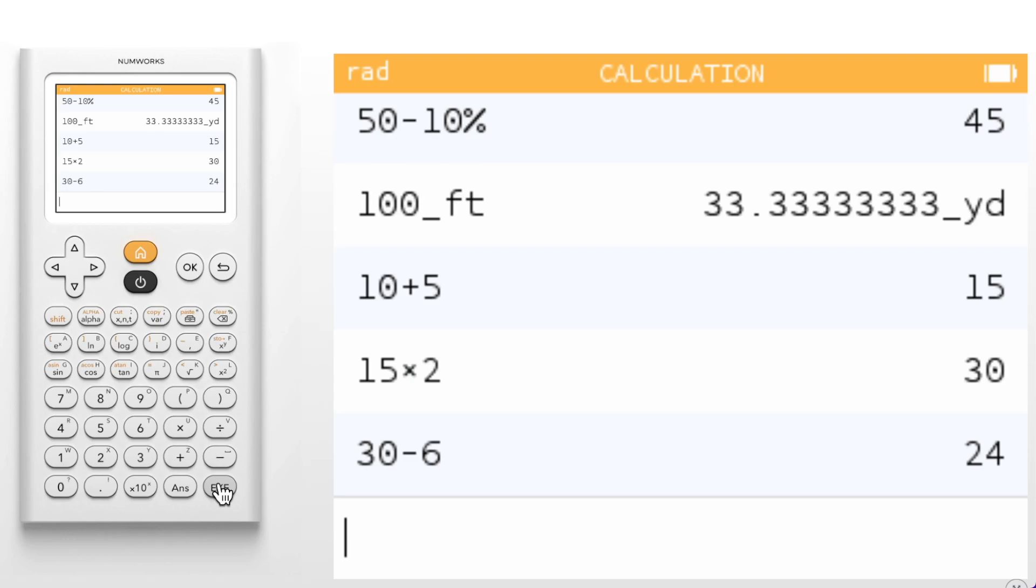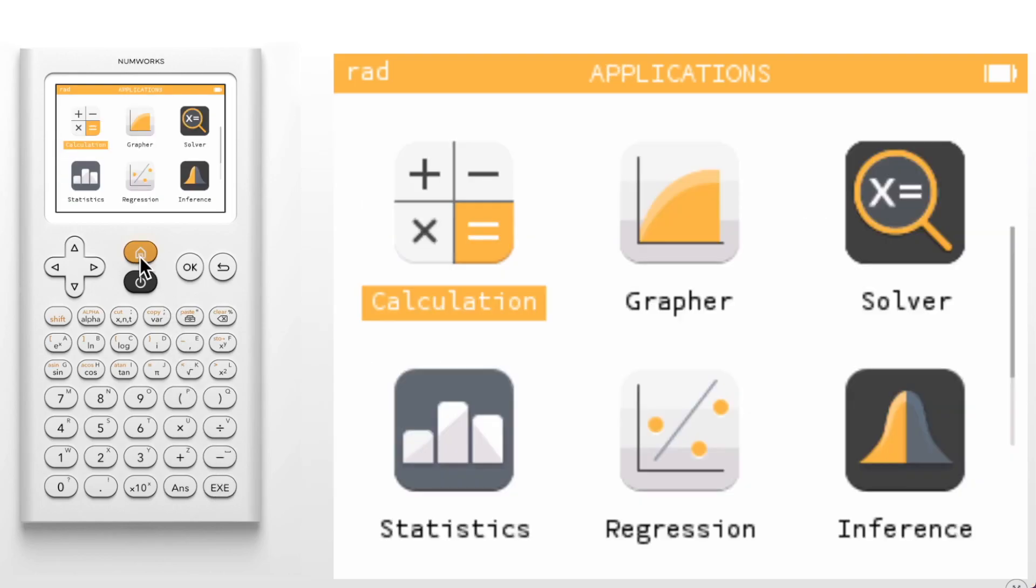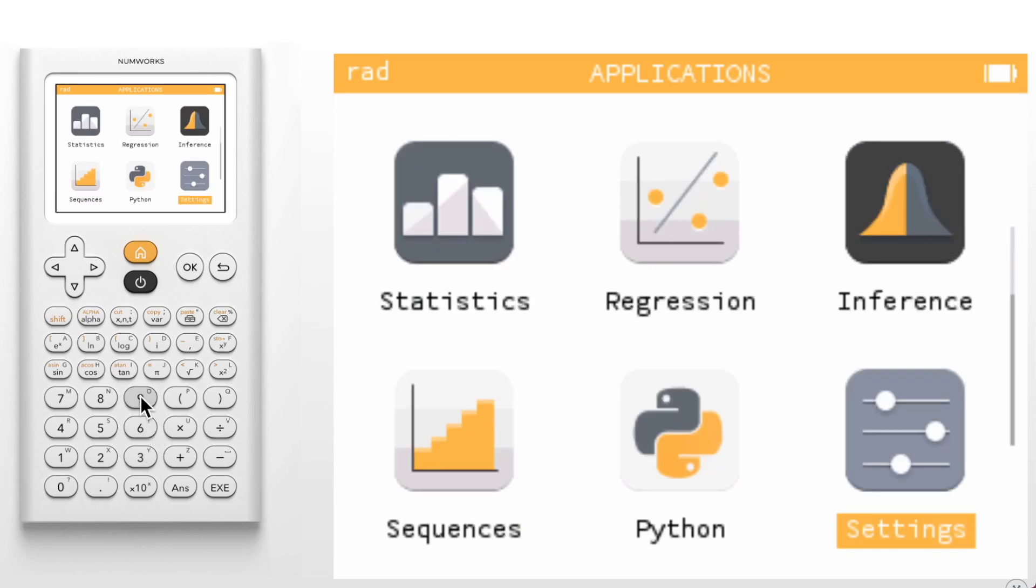Speaking of shortcuts, the home screen now features shortcuts to the applications. On the home screen, you can of course select an application by using the arrow keys to highlight an application and pressing OK to open the application. But instead of using the arrow keys, you can also now use numbered shortcuts to access those apps. For example, pressing 3 will move your selection to the third application, the solver, and pressing 9 will move your selection to the ninth application settings. Pressing a number twice will open the application.